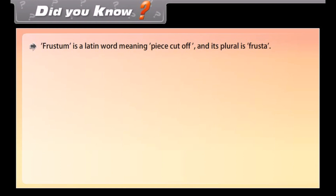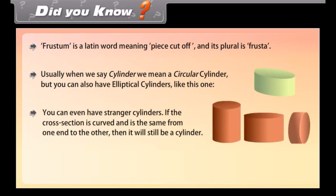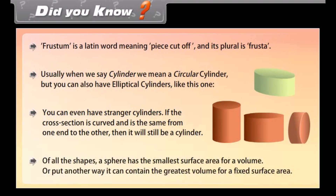Did you know? Frustum is a Latin word meaning 'piece cut off' and its plural is frusta. Usually when we say cylinder we mean a circular cylinder, but you can also have elliptical cylinders. If the cross-section is curved and is the same from one end to the other, it is still a cylinder. Of all shapes, a sphere has the smallest surface area for a given volume — or put another way, it can contain the greatest volume for a fixed surface area.